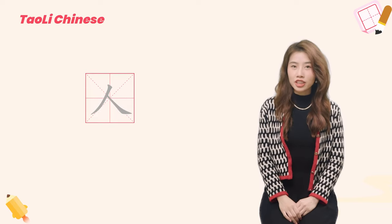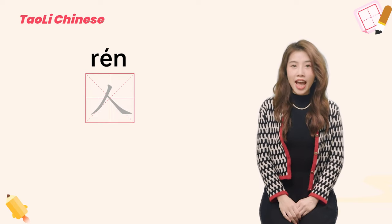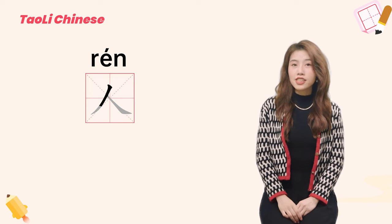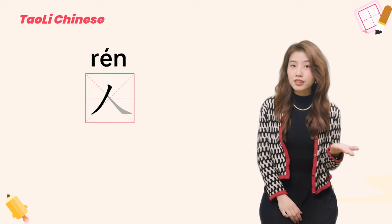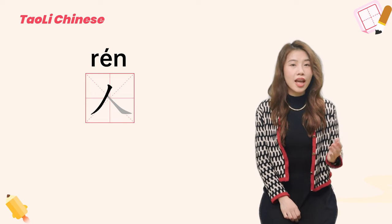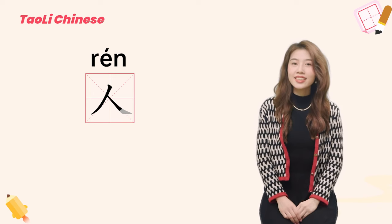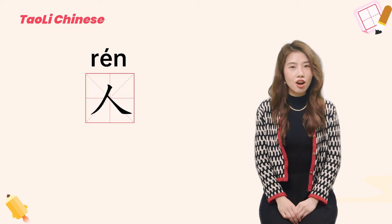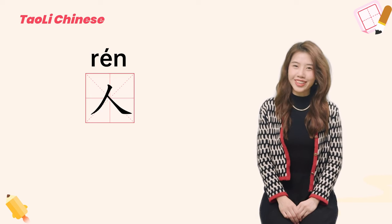Now let's learn how to write this character. The character 人 has two strokes. The first is the left slumping downward stroke, and the second is the downward right concave stroke.